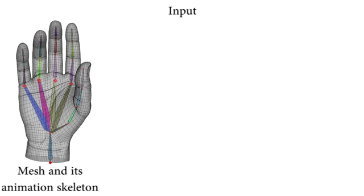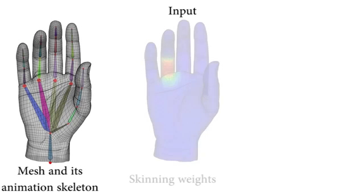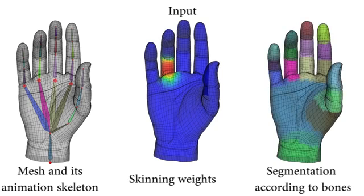We start with standard inputs: the mesh and its animation skeleton, the skinning weights, and the mesh partitioned with respect to the skeleton bones.